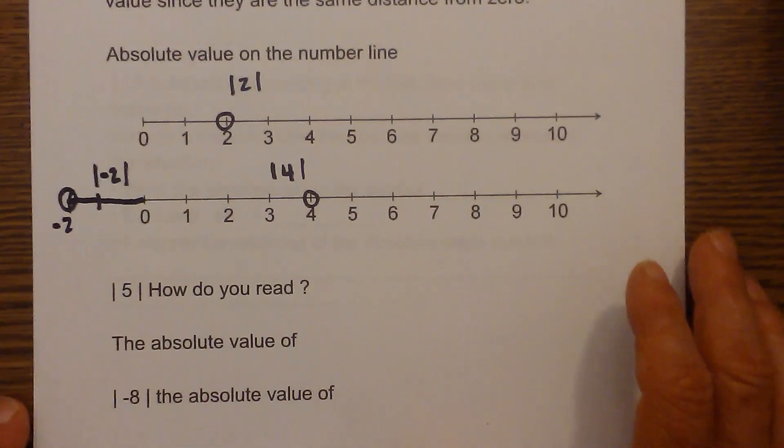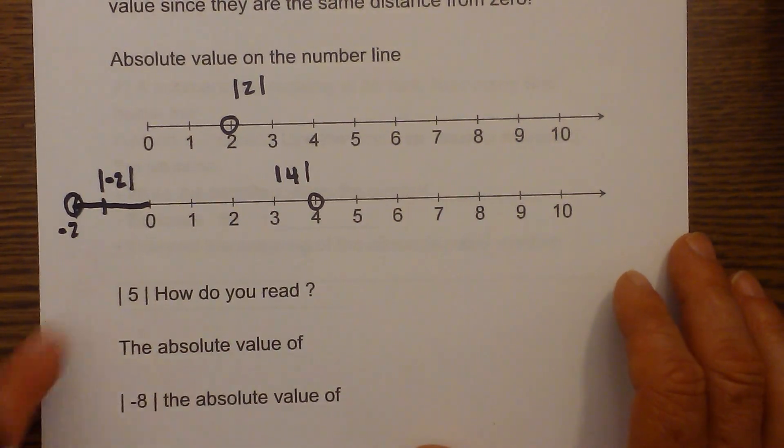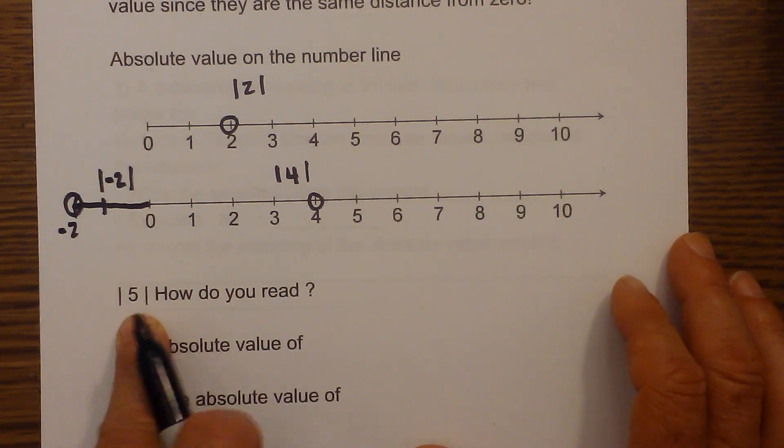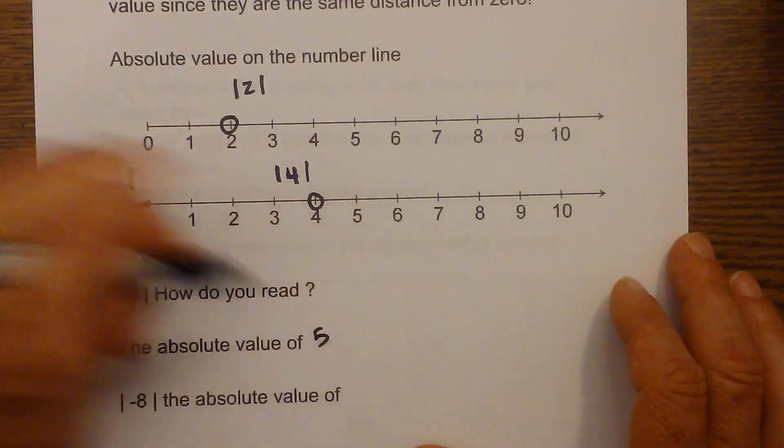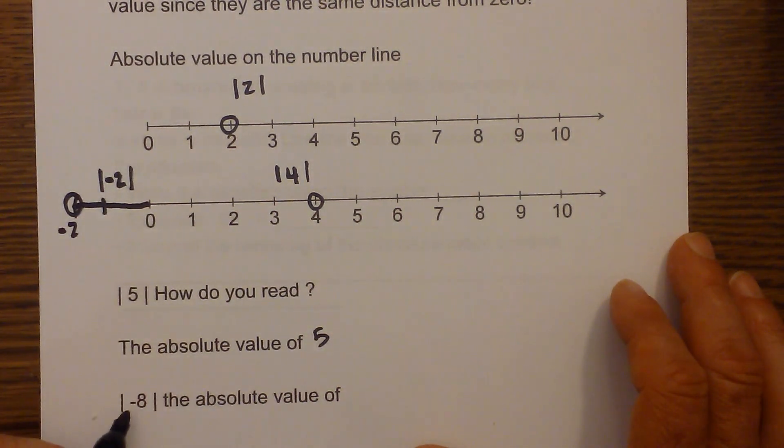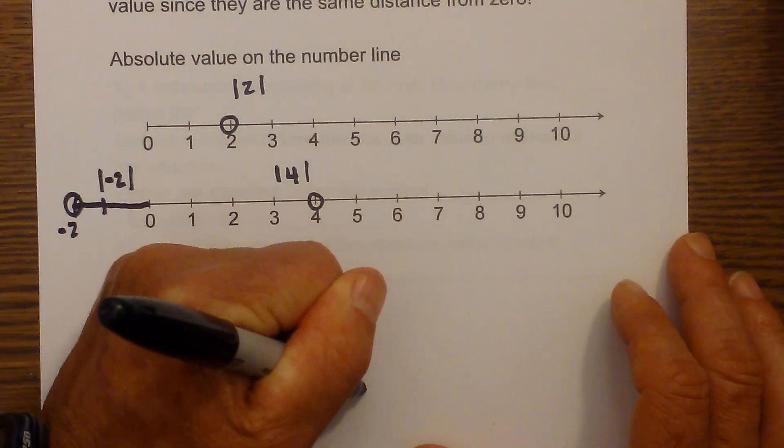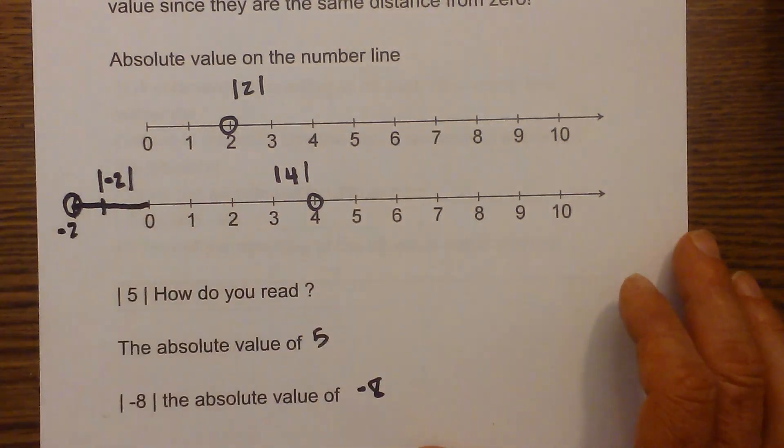Now how do you read this? Say you have absolute value of 5. You read it—you have the two symbols, so you read it the absolute value of 5. Now, what about this? You have negative 8 in between the absolute value symbols. It would be the absolute value of negative 8.